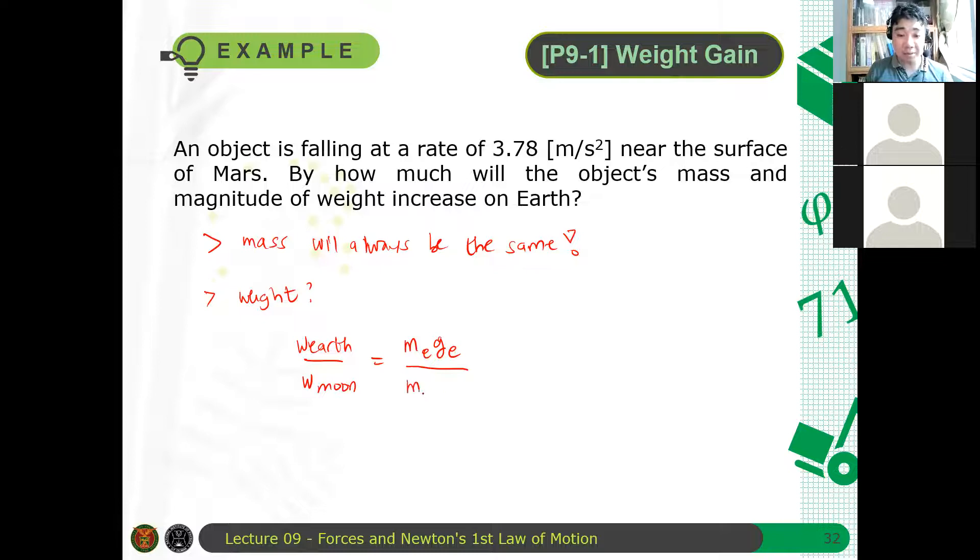And then, mass ni moon times acceleration due to gravity ni moon. And ano yan? Since the mass of the Earth and the mass of the object at Earth and the moon are the same, so this will cancel out. Ang matitira lang ay acceleration due to gravity. And acceleration due to gravity at Earth is 9.81 meters per second squared, all over 3.78 meters per second squared.